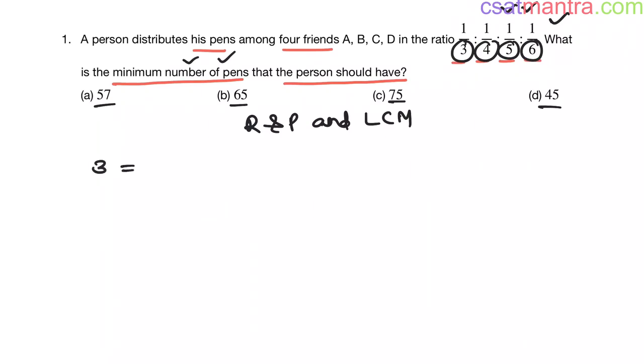3's prime factor is 3, 4 is 2 squared, 5 is 5, and 6's prime factors are 2 times 3. Now, LCM of all these denominators is the highest power of 2 which is 2 squared, highest power of 3 which is 3, and highest power of 5 which is 5.